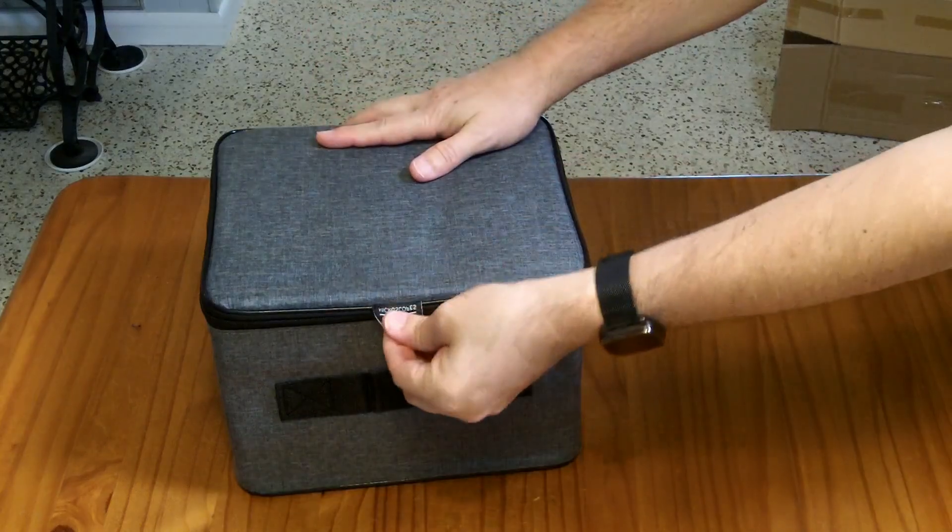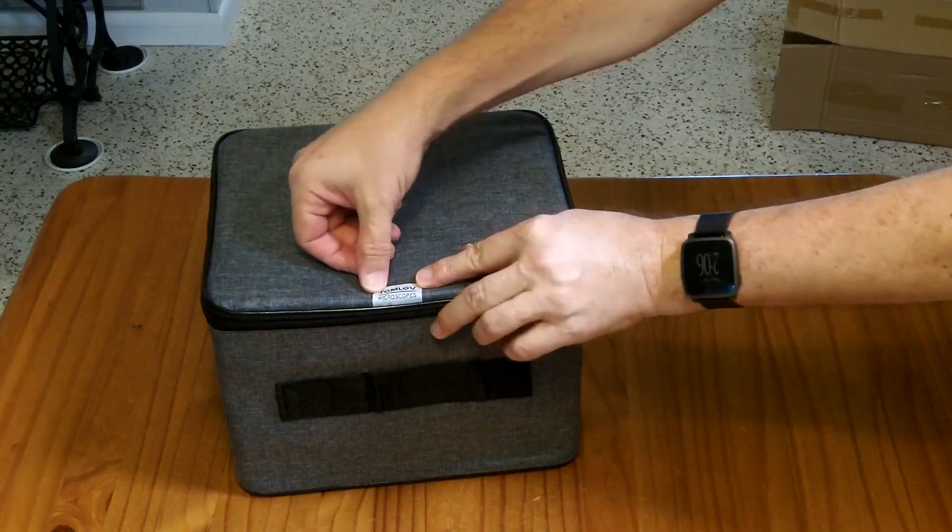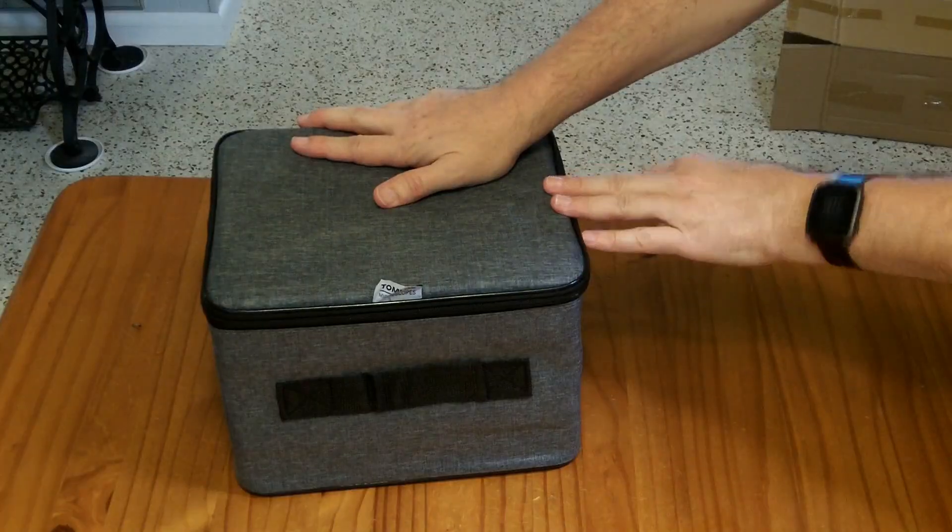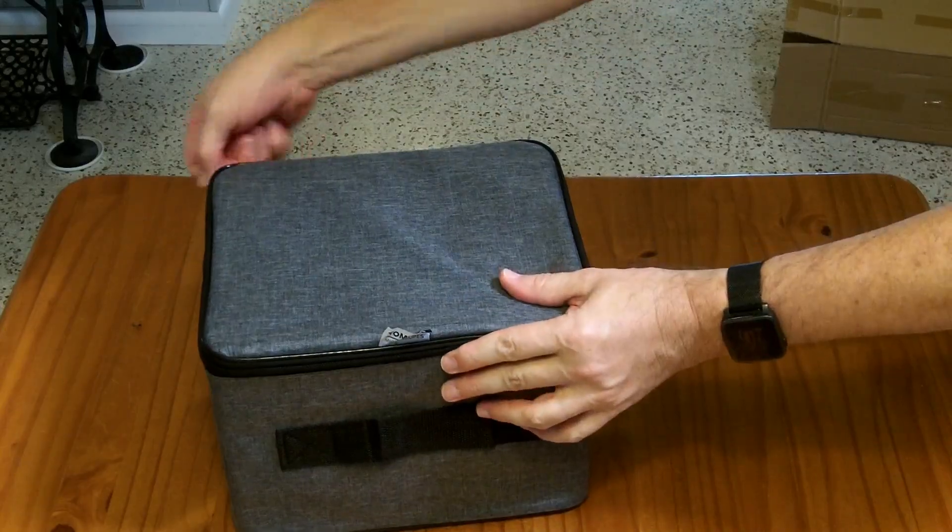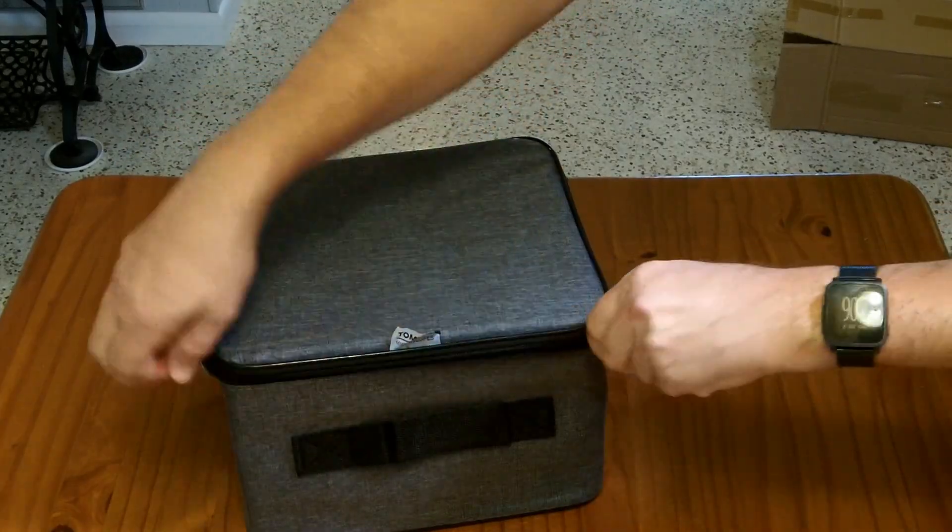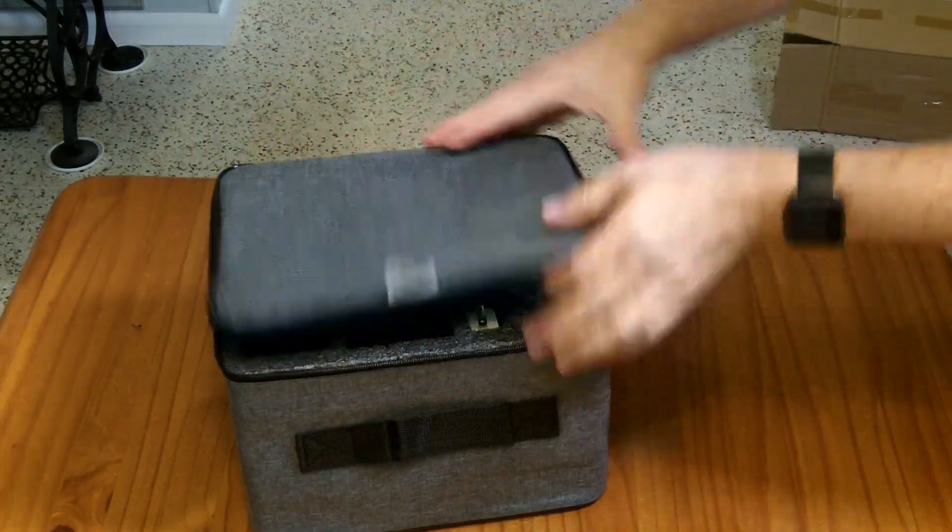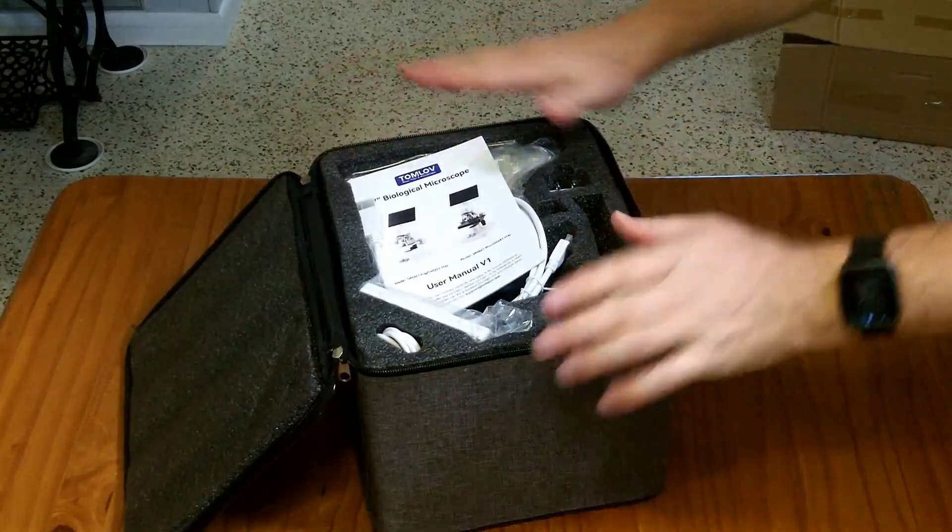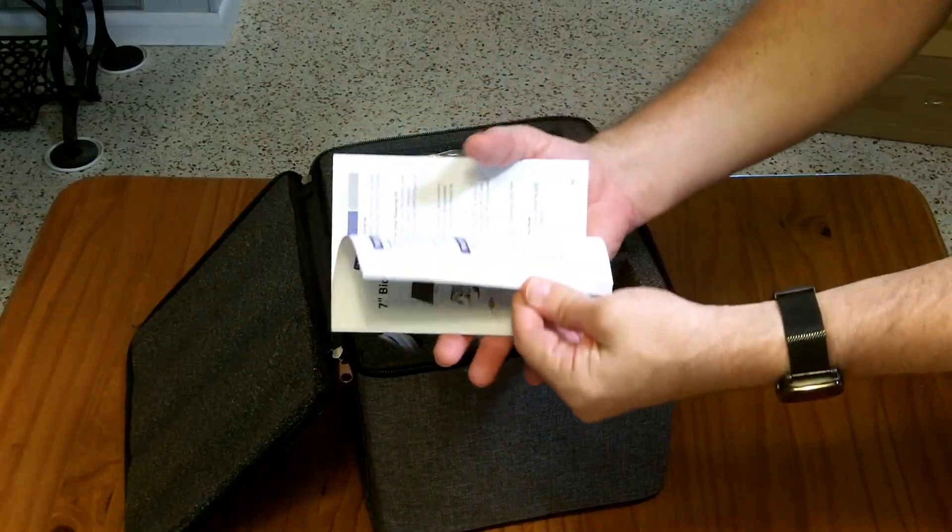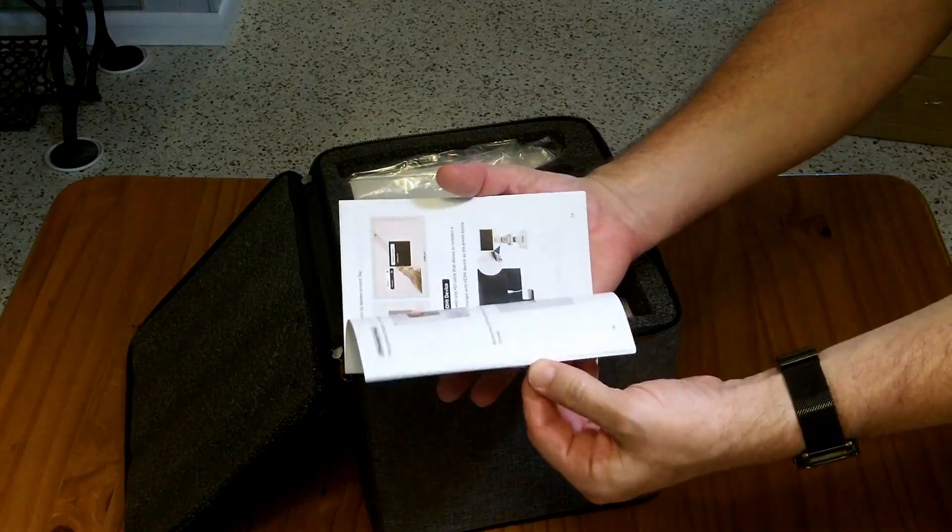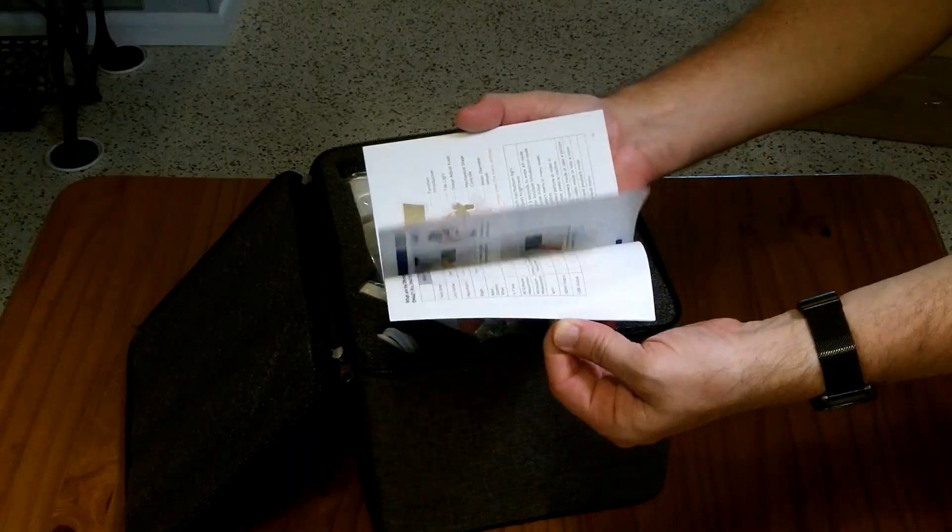The MicroScope comes with this nice little storage pouch here. It has a handle you can carry it around. It's square, so it'll stack pretty well. When you open it up, there's nice foam here. It comes with a user's manual, and this is all English. It seems to be pretty well written with nice pictures.